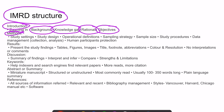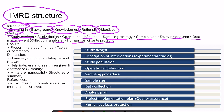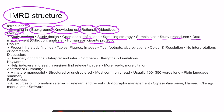Under the methods section, headings include study settings, study design, operational definitions, sampling strategy, sample size, study procedures, data collection methods, data analysis plan, and human participants protections. In the results section, findings should be presented in the form of tables and figures. Tables are for data representation; figures and images allow visualization. Titles, footnotes, and abbreviations should be clear, as should color and resolution. No interpretation or comments should appear in the results section — those are reserved for discussion.